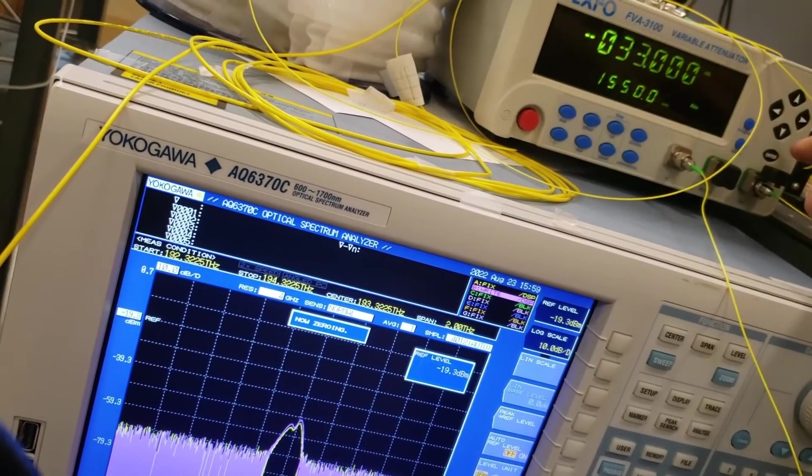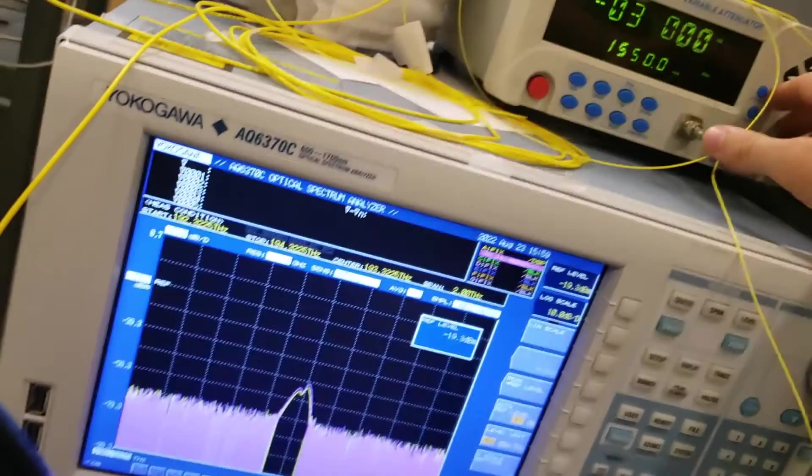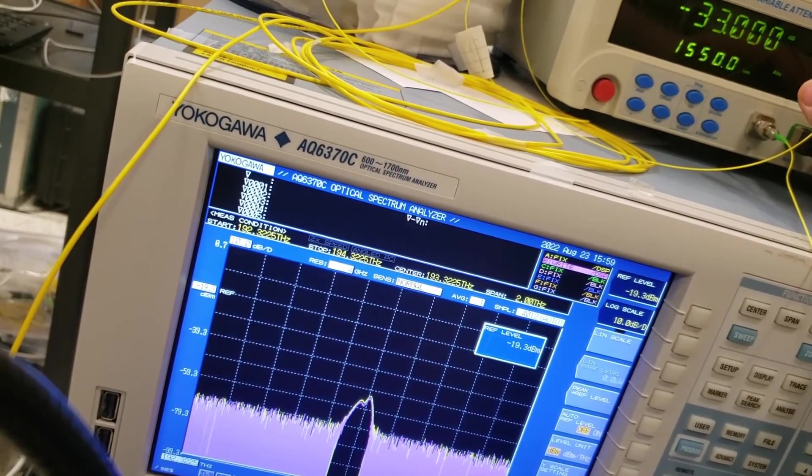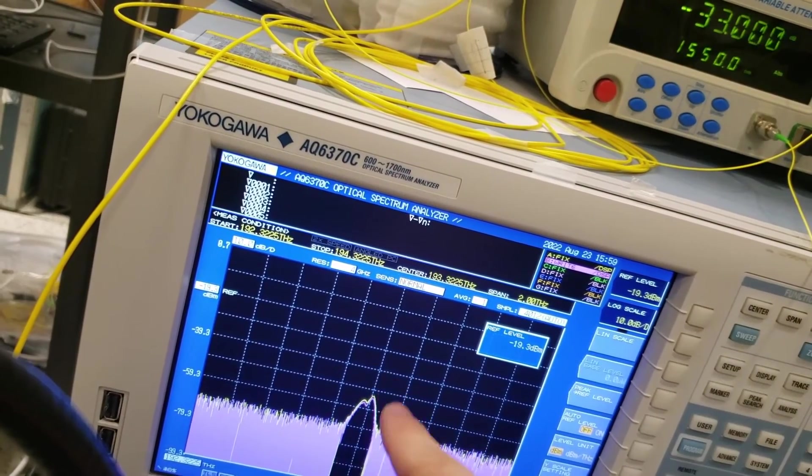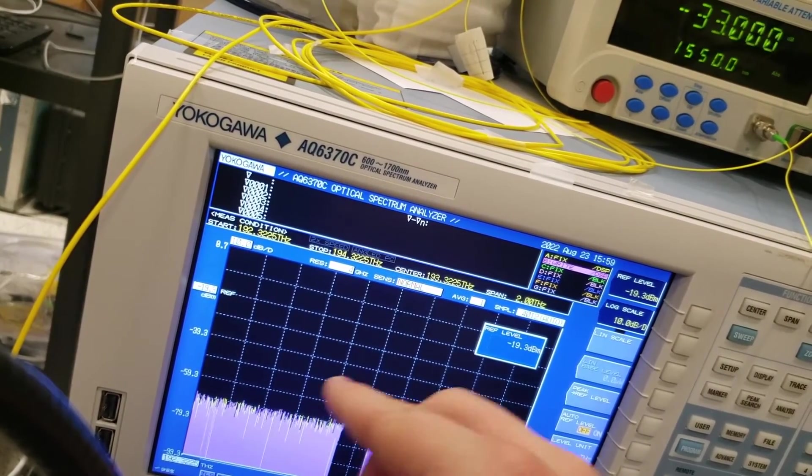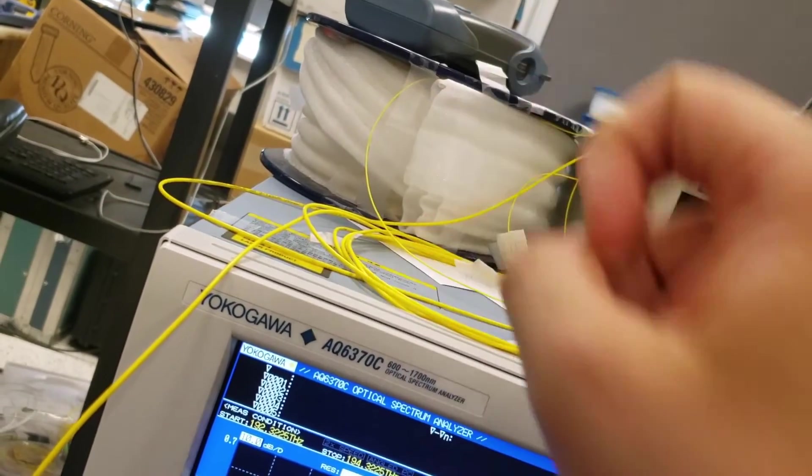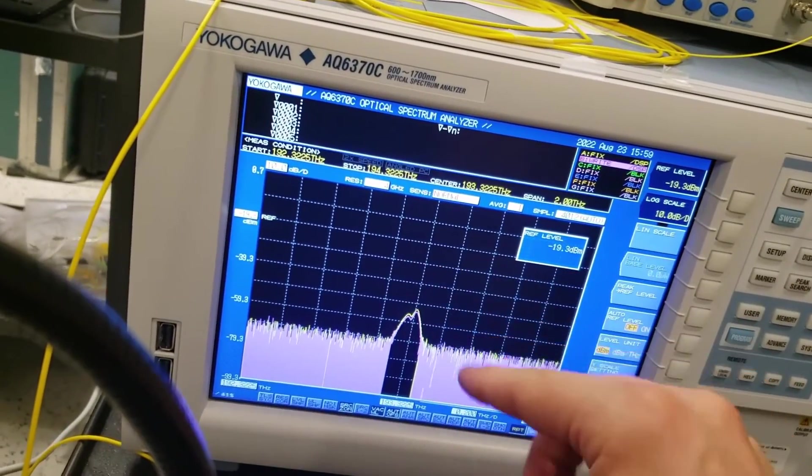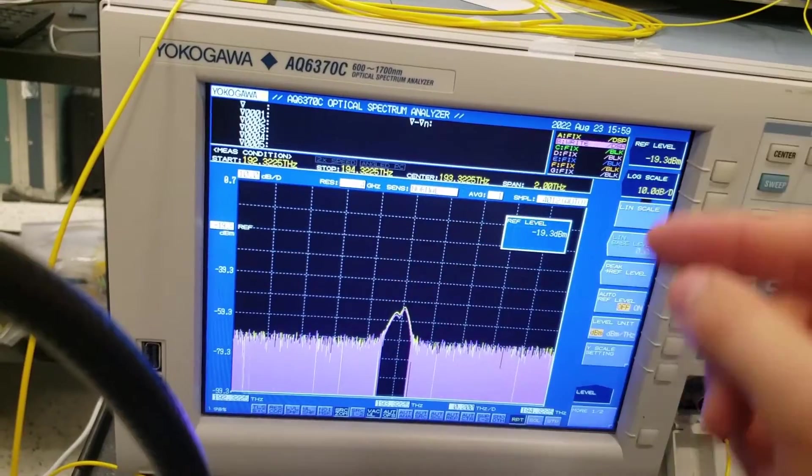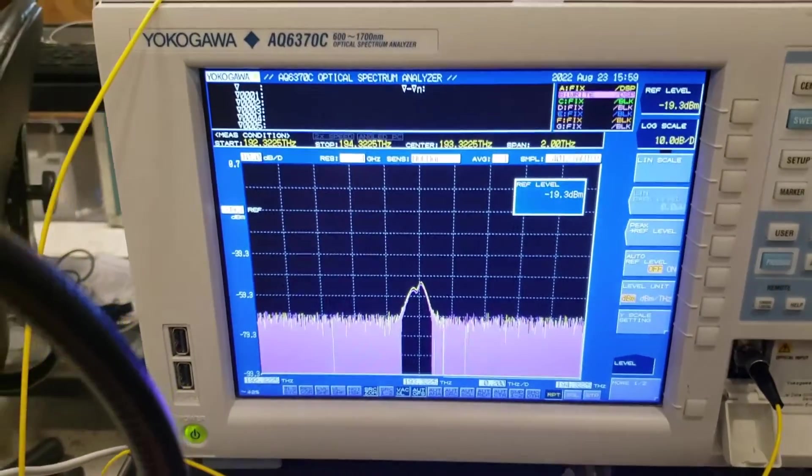So if I press enter now, you should be able to see the purple trace on here change a little bit. So the yellow trace, that is the pulse spectrum before the fiber spool up here, that's the non-linear medium, that's all our reference. And then the purple one is what we see at the output of the medium.